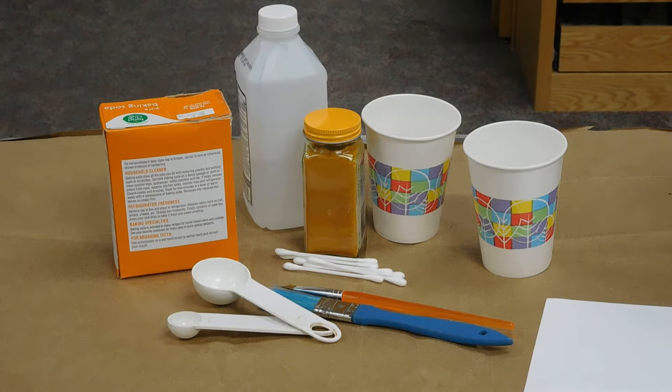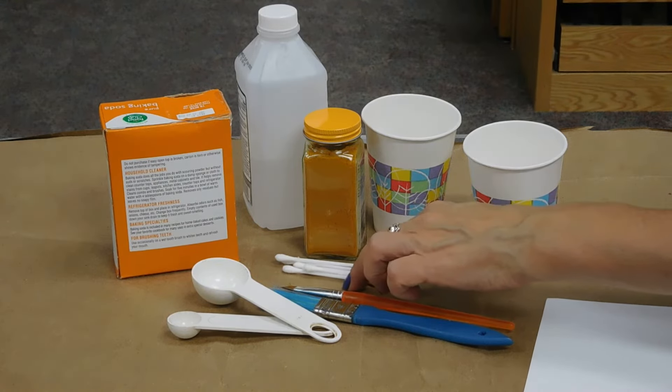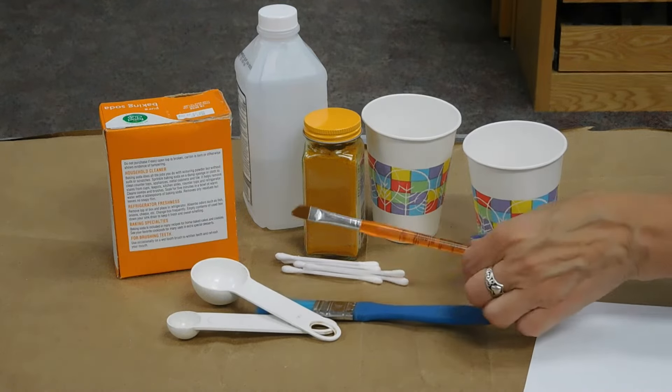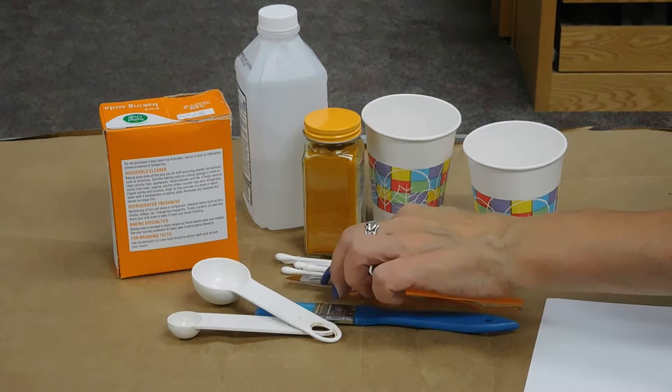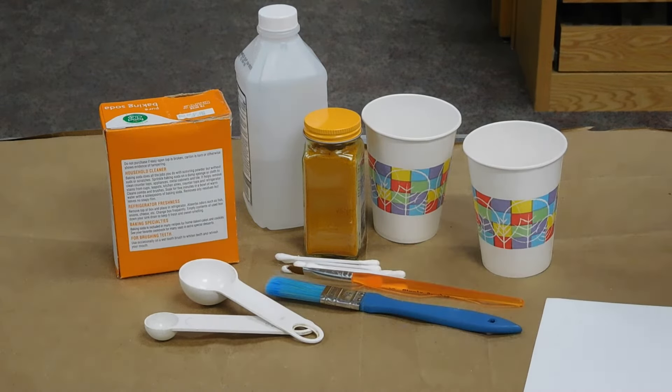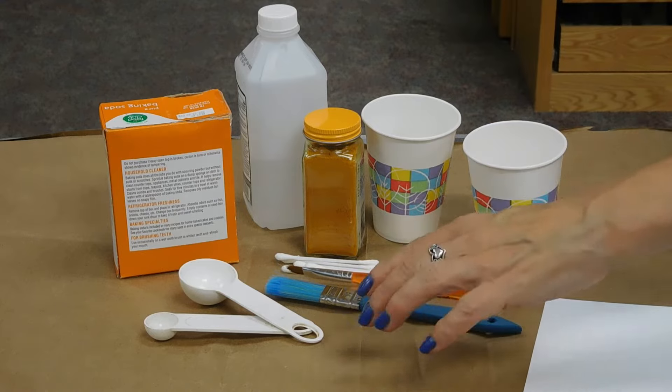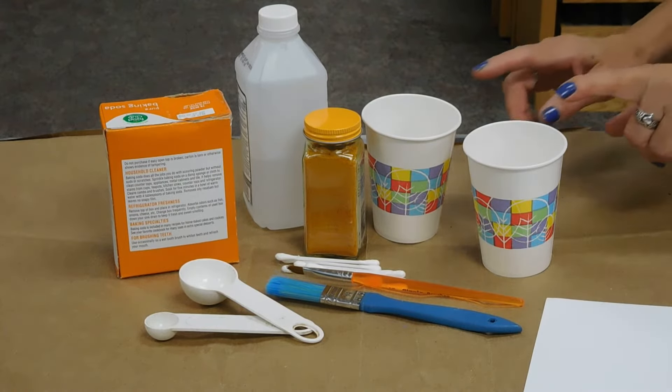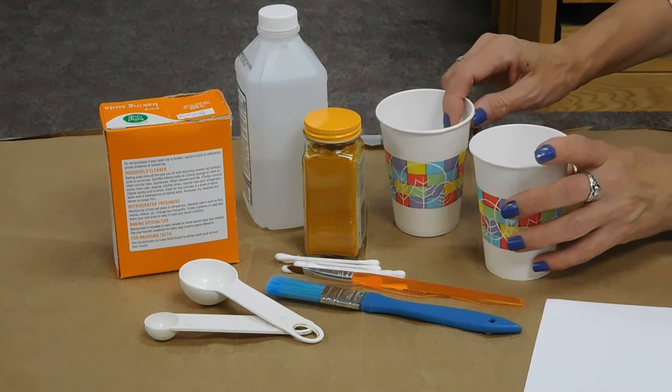We need something to paint with so I have an assortment of things. I've got cotton swabs and two paint brushes. The first paintbrush I'm going to use for painting on the ink. The second I will use to paint on the developer. Measuring spoons and I have a tablespoon and a half teaspoon. Small bowls or cups. I've got the two cups here.